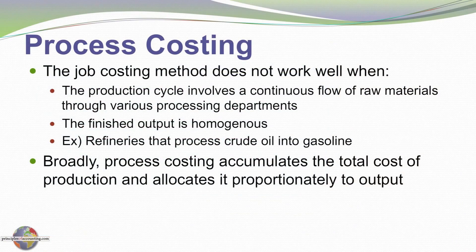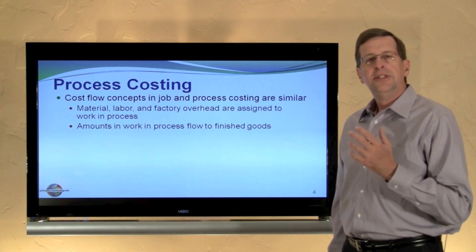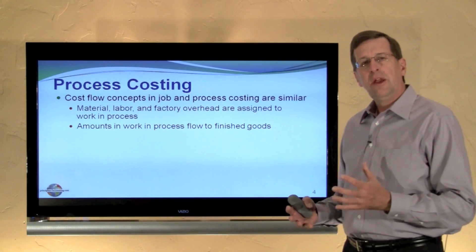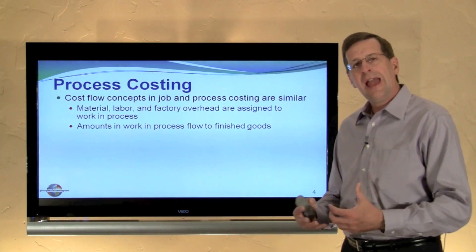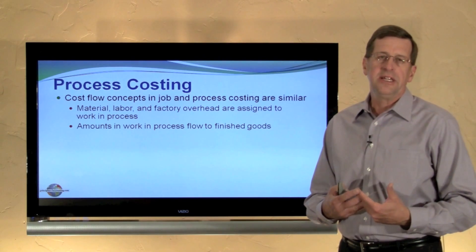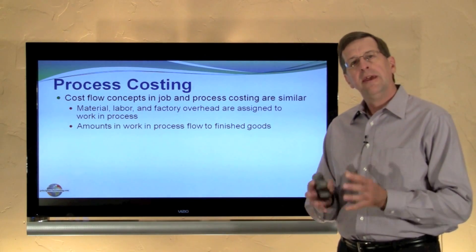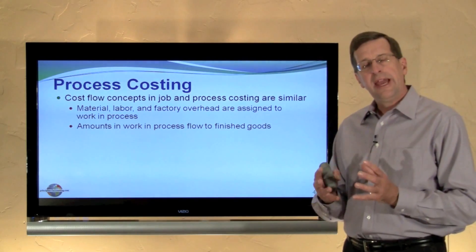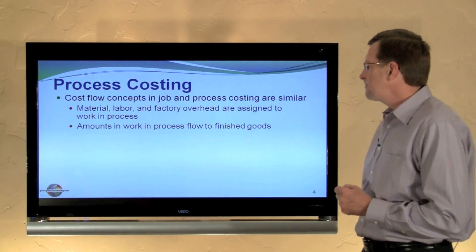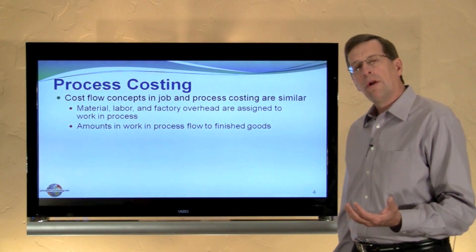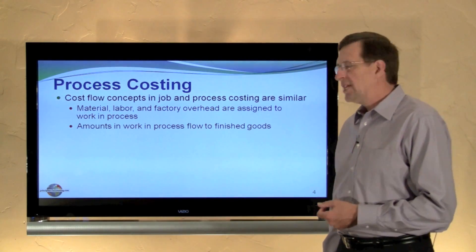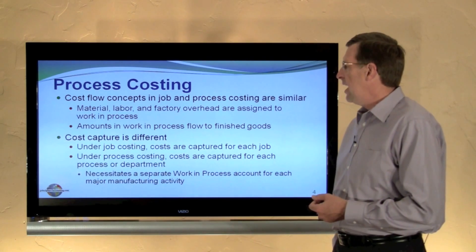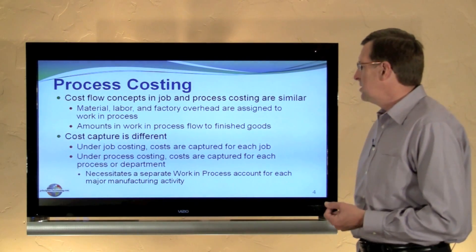Broadly speaking, process costing accumulates the total cost of production and allocates it proportionately to output. Recognize that job costing and process costing, while they're applied to different types of production, the concepts are very similar. That is, we still have direct material, direct labor, and factory overhead costs that we must accumulate and assign to output. As production is completed, amounts are removed from our work-in-process accounts and transferred into the finished goods inventory category. However, the cost capturing system is different.